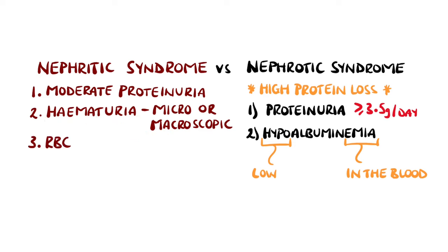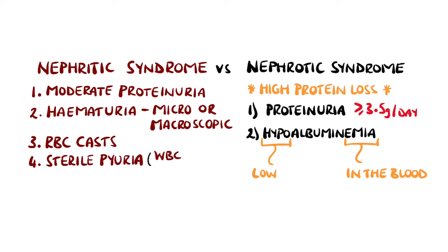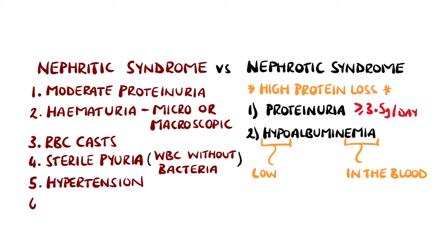Additional features of nephritic syndrome include red blood cell casts in the urine, sterile pyuria — which is the presence of white blood cells without evidence of bacteria — hypertension, and oliguria, which is a reduced urine output, typically between 80 and 400 millilitres per day.